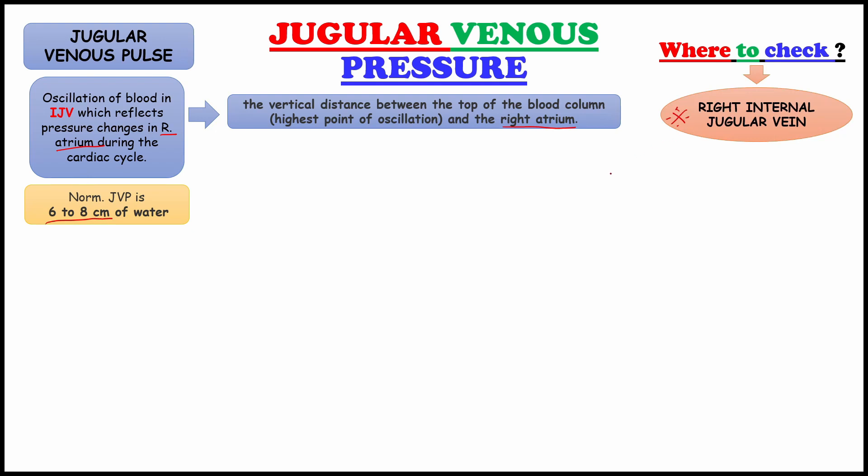Why we particularly check on the internal jugular vein and why we choose on the right side? Let me explain. Right internal jugular vein extends in almost straight line to superior vena cava. So it is favoring the transmission of the hemodynamic changes of the right atrium.